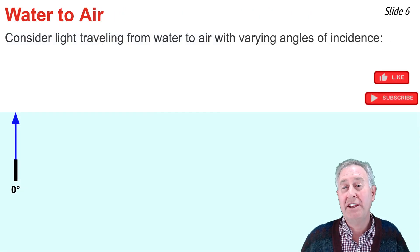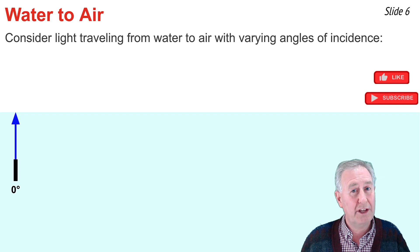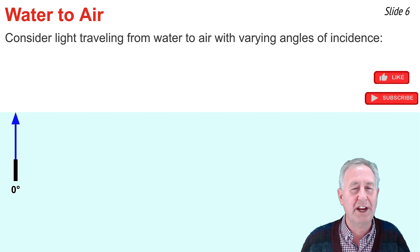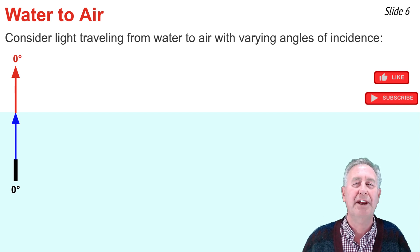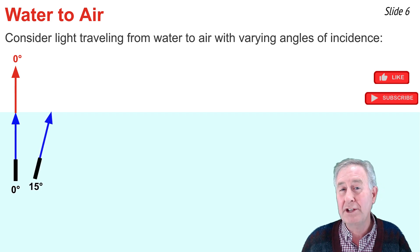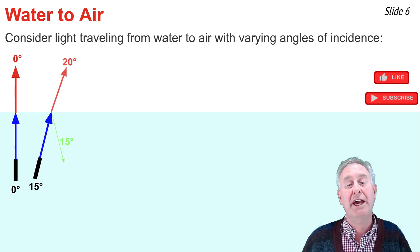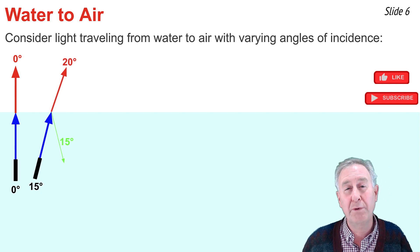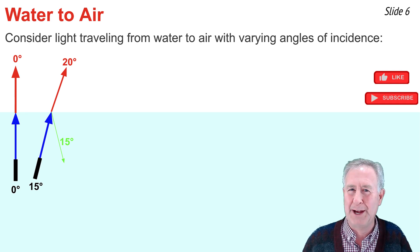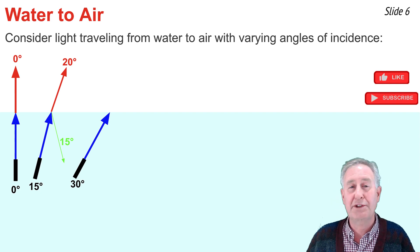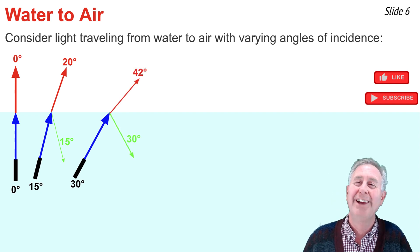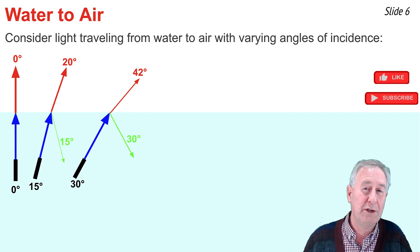Now let's reverse the situation and have the incident ray in the more dense water heading towards the less dense air. Refraction now occurs away from the normal line since light travels from more dense to less dense. At 0 degrees the light passes straight across without bending — a bright refracted ray and a barely visible reflected ray. At 15 degrees, refraction occurs at 20 degrees and is a little dimmer; the reflected ray occurs at 15 degrees and is a little brighter. At 30 degrees, the angle of refraction is 42 degrees and the refracted ray continues to dim.